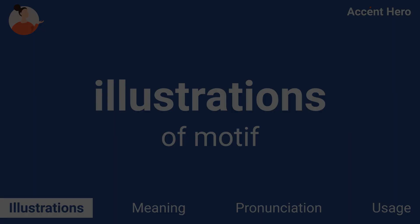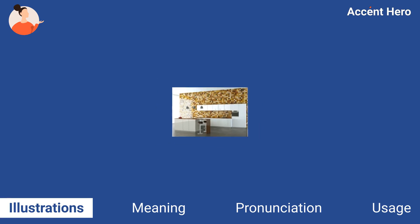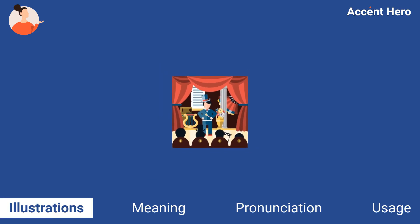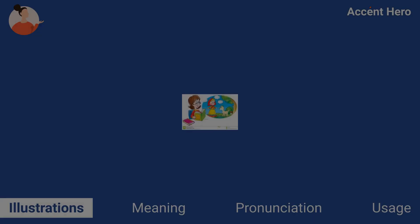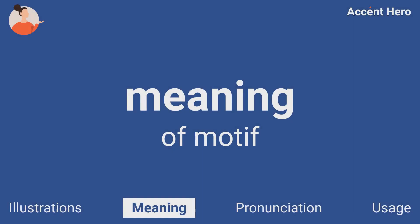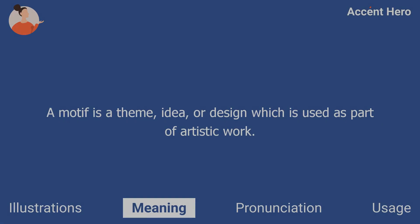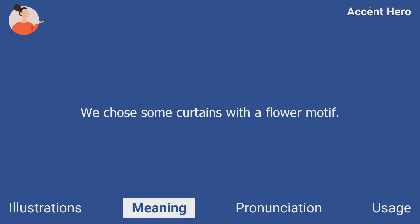Illustrations. Meaning: Motif is a noun. A motif is a theme, idea, or design which is used as part of artistic work. For example, you can say, 'We chose some curtains with a flower motif.'